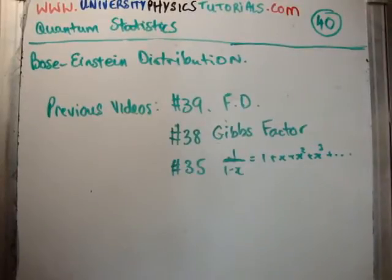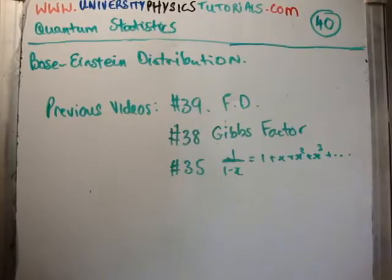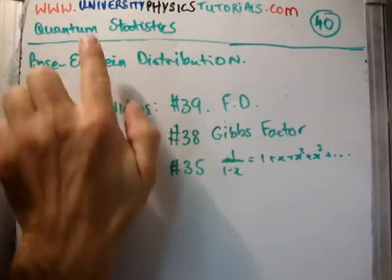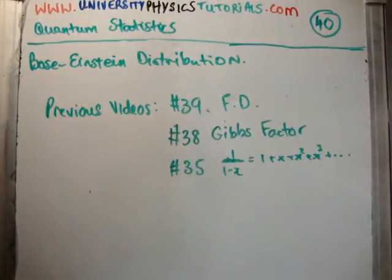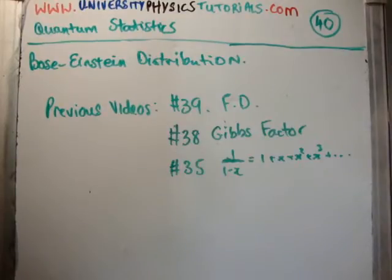In this video I'm going to continue on with my tutorials on quantum statistics. This is video number 40, and I'm going to derive the Bose-Einstein distribution for bosons. My website is universityofphysicstutorials.com. In the previous video, number 39, I derived the Fermi-Dirac distribution function, and in number 38, I derived the Gibbs factor.